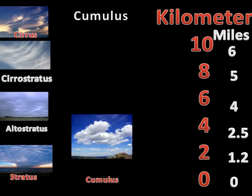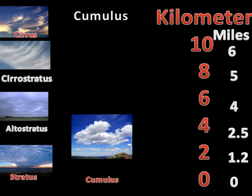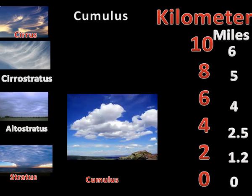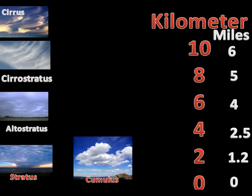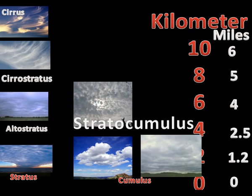Cumulus clouds are a type of cloud with noticeable height and clearly defined edges. They are often described as puffy or cotton-like in appearance and may appear alone, in lines, or in clusters. Cumulus clouds often lead to other types such as cumulonimbus. These clouds usually have a base of 2 kilometers, but their height can reach 6 kilometers.